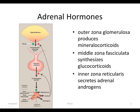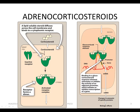The inner zone, reticularis, secretes adrenal androgens. The adrenal corticoid is bound to specific intracellular cytoplasmic receptors in target tissue. This mechanism requires time to produce an effect, but other glucocorticoid effects, such as their interaction with catecholamines and immediate relaxation of bronchial musculature, have effects that are immediate.